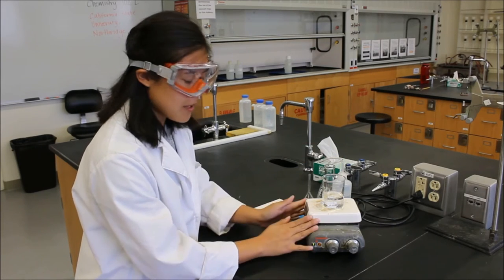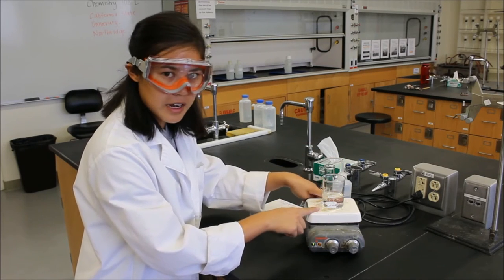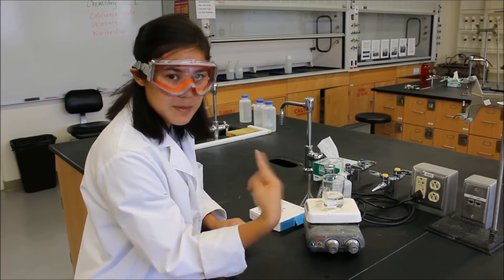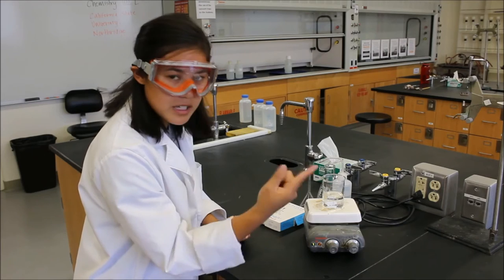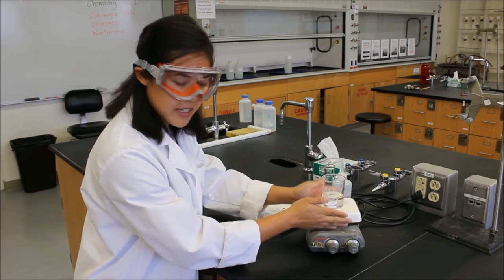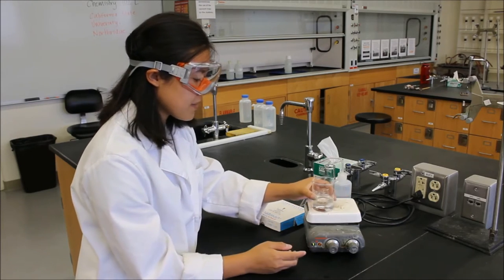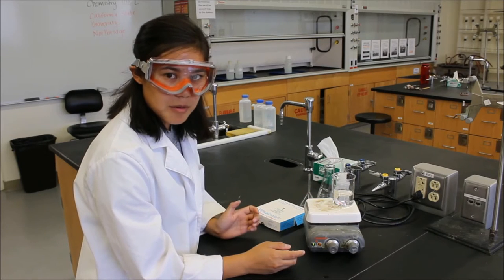Now how this stir bar works on this hot plate is that there's a little metal rod in there, it's a little magnetic, that spins when we want this to stir. So it only spins in one direction and it's in a fixed location in here. So if we have it off to the side, we won't be able to stir it properly.